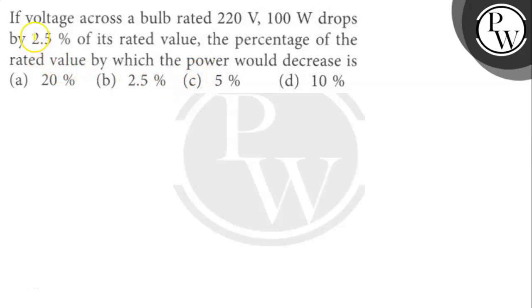Hello, let's read the question. The question says here, if voltage across a bulb rated 220V, 100W drops by 2.5% of its rated value, the percentage of the rated value by which the power would decrease is how much percent?